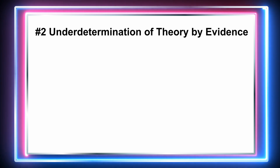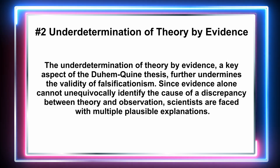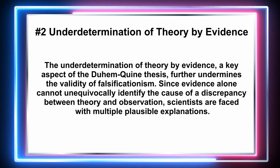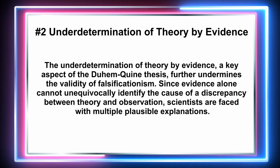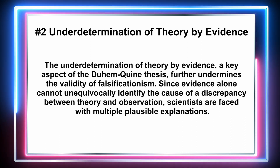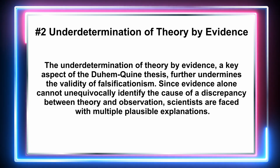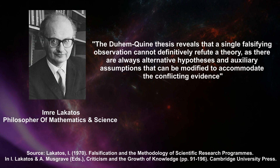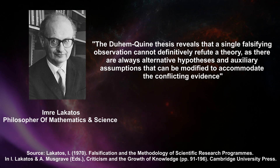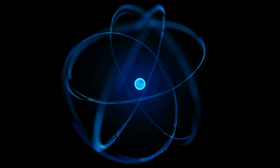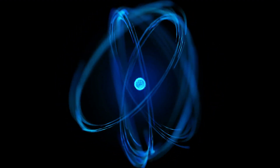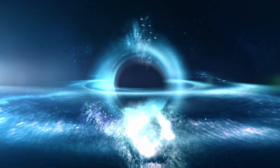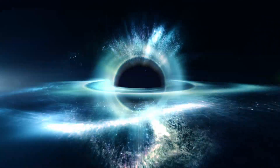Second is the underdetermination of theory by evidence, a key aspect of the Duhem-Quine thesis that further undermines falsificationism. Since evidence alone cannot unequivocally identify the cause of a discrepancy between a theory and an observation, scientists are faced with multiple plausible explanations. As philosopher Imre Lakatos points out, a single falsifying observation cannot definitively refute a theory, as there are always alternative hypotheses and auxiliary assumptions that can be modified to accommodate conflicting evidence. Consequently, the falsification of a specific hypothesis does not necessarily lead to the rejection of an entire theory, but prompts scientists to consider alternative explanations, rendering falsificationism an incomplete and limited methodology.